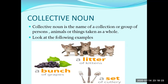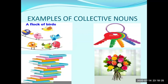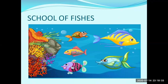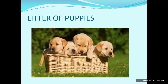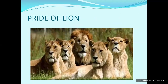In the next example, we can see: flock of birds, bunch of keys, piles of books, bouquet of flowers, school of fishes, litter of puppies, and pride of lions. The words such as flock, piles, bouquet, bunch, school, litter, and pride are single words used to talk about a particular group. This is called a collective noun.